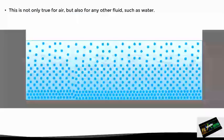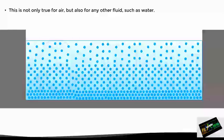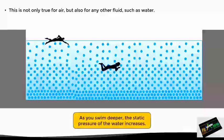Here we have an example of a swimming pool. As we can observe, the way in which the water molecules behave is quite similar to air molecules in the atmosphere. This means that a person swimming on the surface will experience less static pressure than one swimming in the depth. And we can actually feel that change in the static pressure of the water as we submerge deeper, especially in the ears.